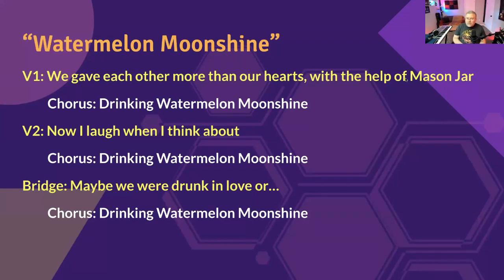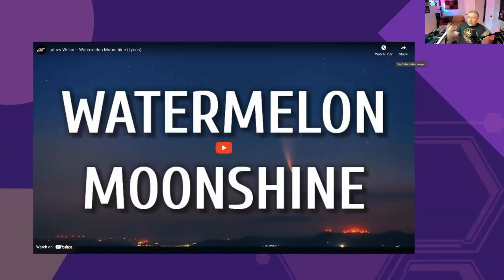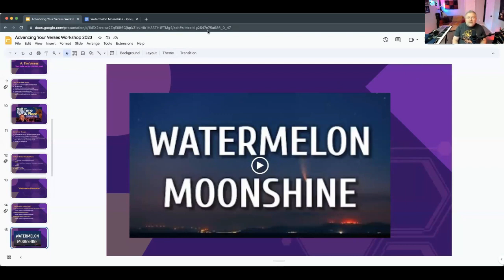So you have three different angles on the same topic that keep us interested as the song goes on. Verse one: 'we gave each other more than our hearts with the help of a mason jar, drinking Watermelon Moonshine.' Verse two: 'now I laugh when I think about drinking Watermelon Moonshine.' Bridge: 'maybe we were drunk in love, or we were just drinking Watermelon Moonshine.' This is a powerful tool you can use in your own songwriting. A lot of times you're making decisions about how you're setting up your chorus before you actually dive into writing your lyrics — it's a good idea to predetermine if your title and hook are even worth developing like this, because some ideas may not lend themselves to full development.